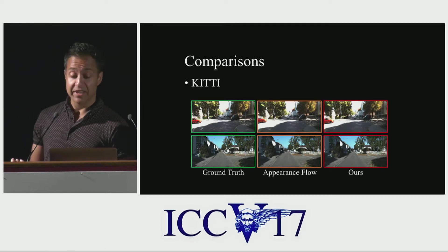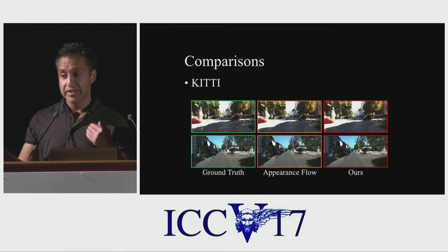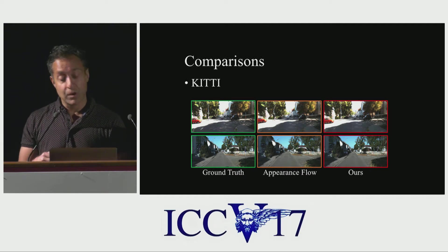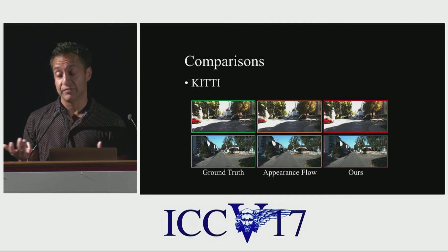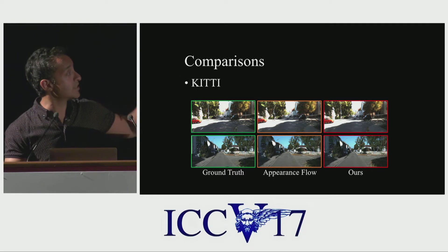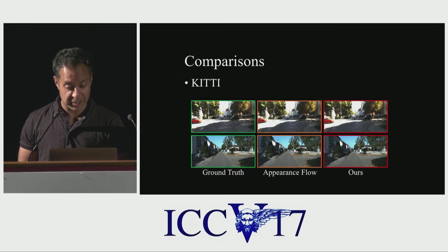As an additional application, we can do novel view interpolation. We can't render arbitrary viewpoints, but we can take two existing viewpoints and interpolate between them. On the left are two ground truth frames from the KITTI dataset; on the right is our result. In the middle is an appearance flow algorithm which also has a differentiable flow layer for novel view synthesis. Structures like signposts are much wavier in the appearance flow result, whereas ours looks pretty good.